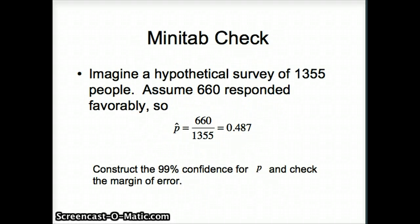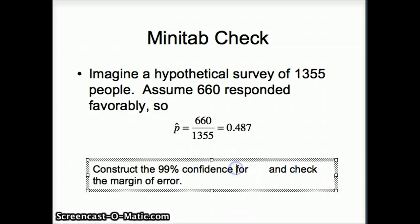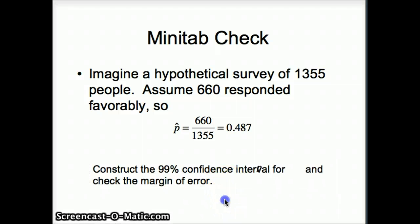But again, let's go ahead and check it on Minitab. We have 1355 is the n that we figured out earlier. I picked a number that will give us pretty close to 0.5, so we said 660 out of 1355. And here we want to get the 99% confidence interval. We want to see if that confidence interval is going to have a margin of error close to what we were looking for.